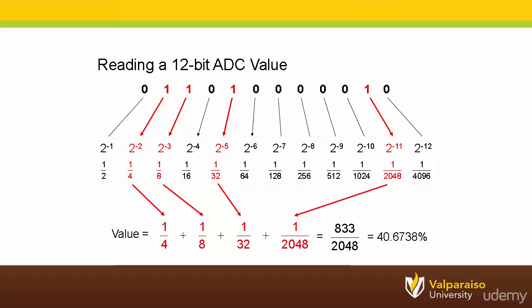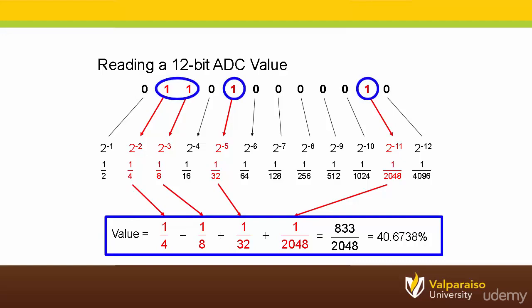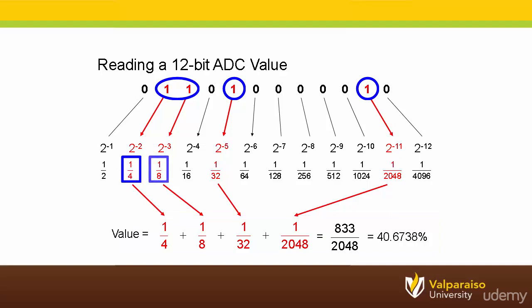To build up our number, we simply add up the fractions that correspond to a high bit in our original binary value. For this example, we have 1 fourth, plus 1 eighth, plus 1 32nd, plus 1 2048th, which adds up to a fraction of 833 2048ths.